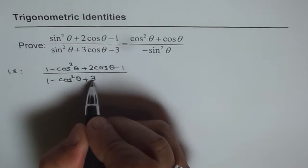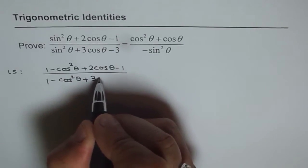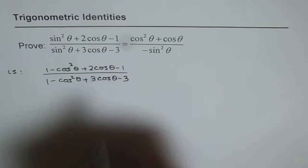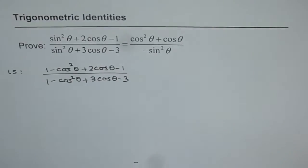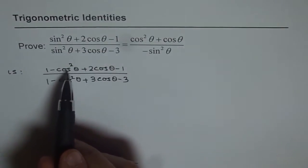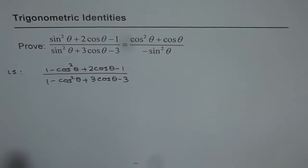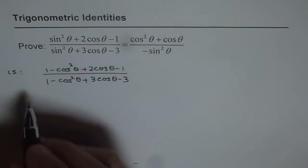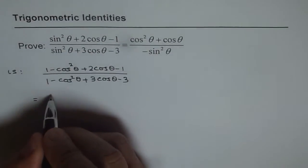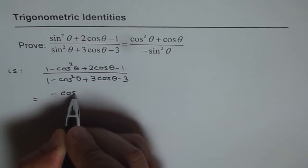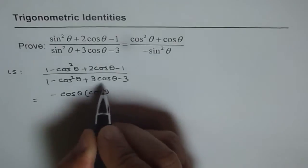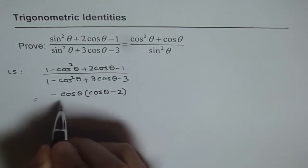Now if you see we have a quadratic equation in cosθ, and that can be factored. 1 minus 1 is 0, so we are left with −cos²θ + 2cosθ in the numerator. That can be written as we take −cosθ as a common factor, and we get cosθ − 2 in the numerator.